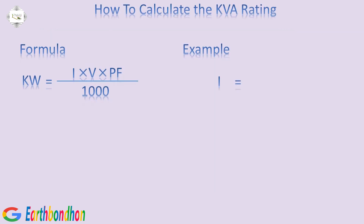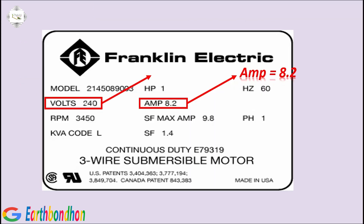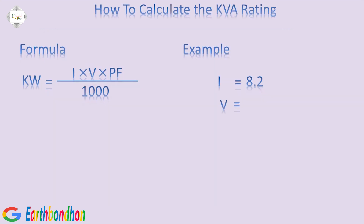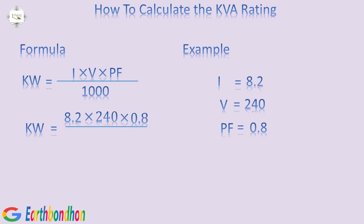Current equals 8.2 Amperes. Volts equals 240. Power Factor equals 0.8. Kilowatts equals 8.2 Amperes multiplication 240 multiplication 0.8 division 1000. Kilowatts equals 1.5 Kilowatts.